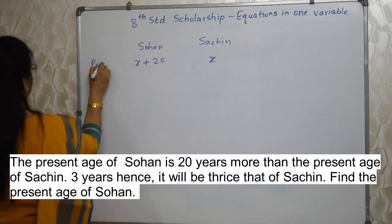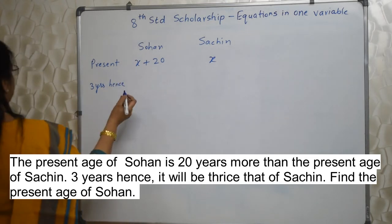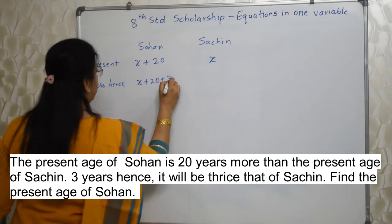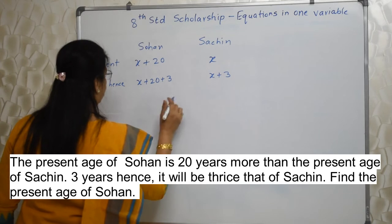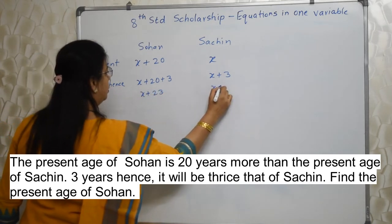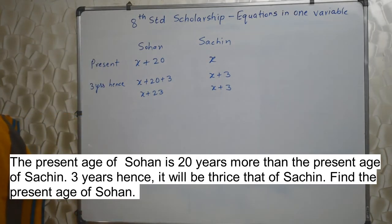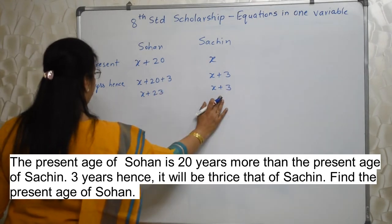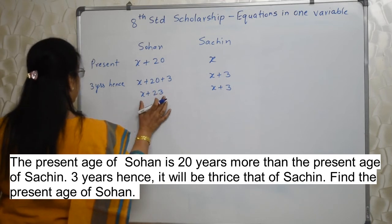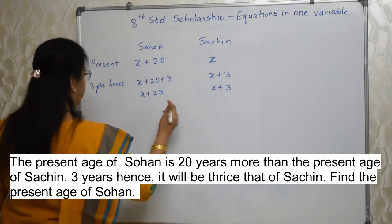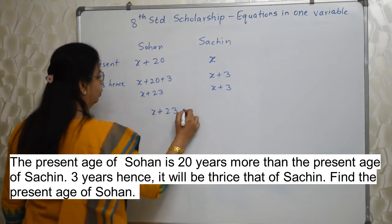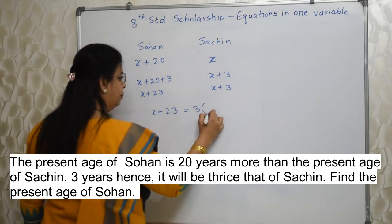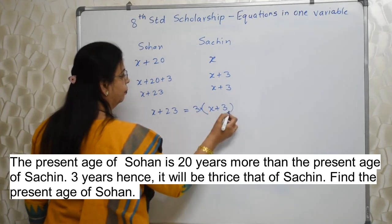Now 3 years hence, this is present age what we have written. Now 3 years hence, obviously this will be x plus 20 plus 3 and he will be x plus 3. So this will be x plus 23. This will be x plus 3. Now 3 years hence it will be thrice the age of Sachin. Now these are the ages of both the boys after 3 years. They have given the relationship between these 2 ages. They are saying after 3 years, Sohan's age will be 3 times Sachin's age. So write down, translate this into mathematical language. x plus 23 is 3 times, times means into, x plus 3.